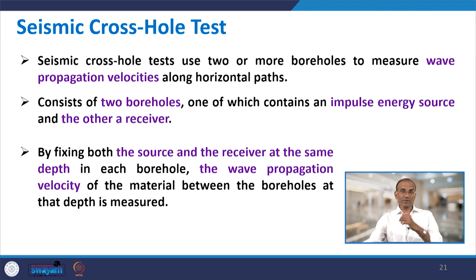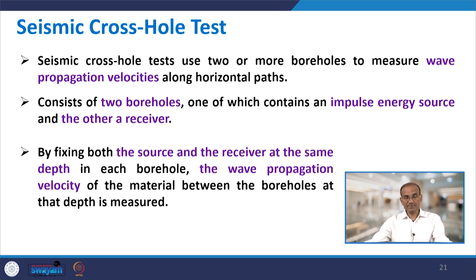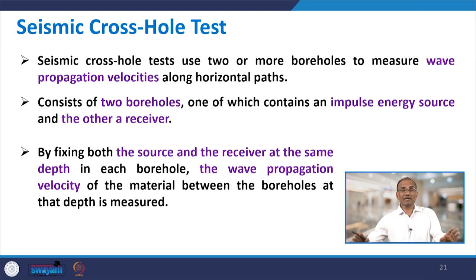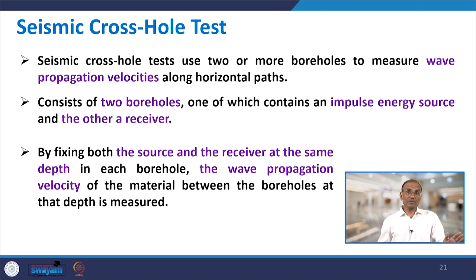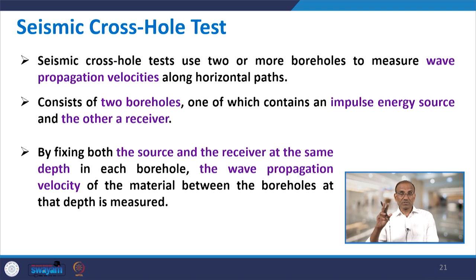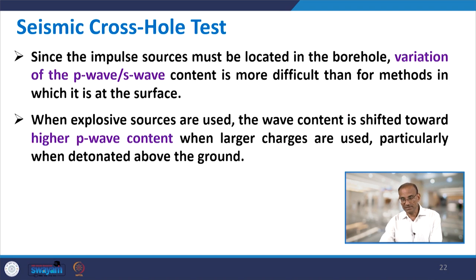The next test is the seismic cross hole test, again a low strain test. All the geophysical tests discussed so far — SSW, steady state vibration, seismic reflection, seismic refraction — required no borehole. However, the seismic cross hole test requires boreholes — two or more. With a minimum of two boreholes, one contains an impulsive energy source and the other contains the receiver.